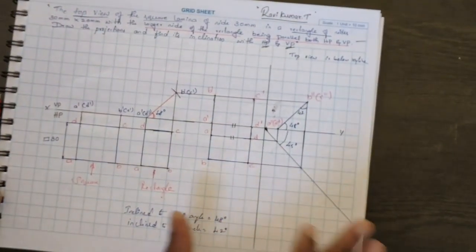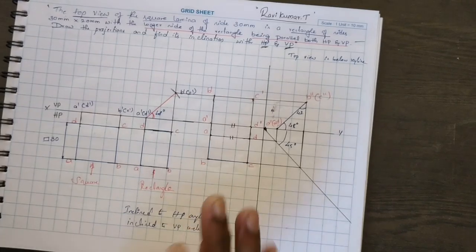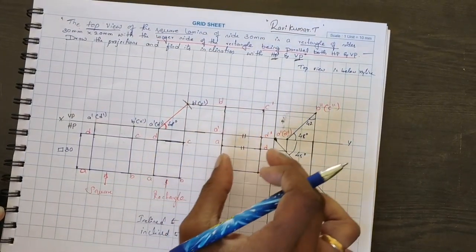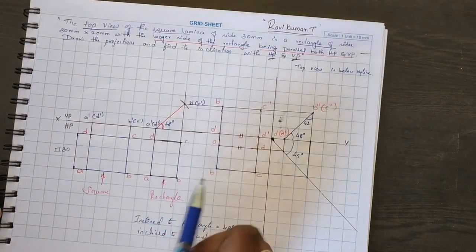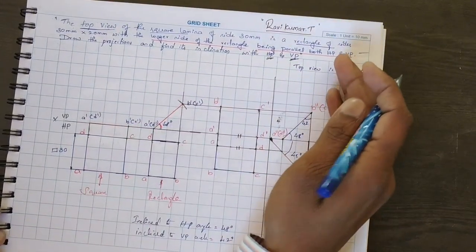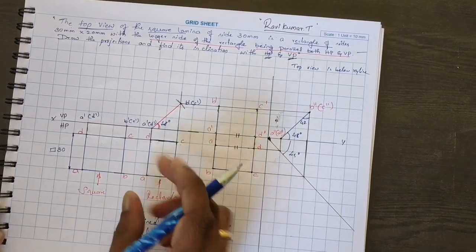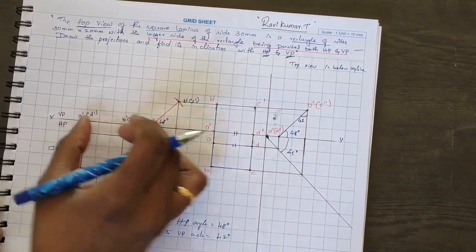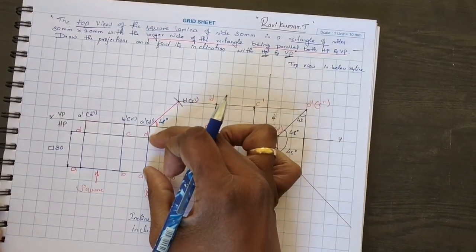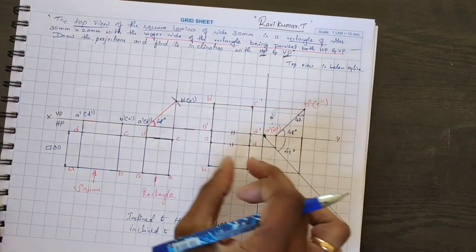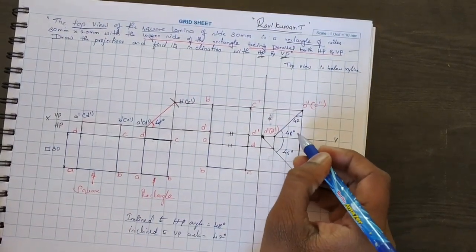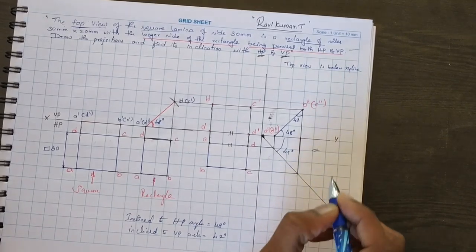This completes the problem. You have to understand where to place the lamina and what the second and final positions are. First, consider the square. Next, take a rectangle. Then use the surface of the lamina to find out the inclination with HP. After that, make the longer side parallel to both planes. Then go for finding out the inclination with VP.